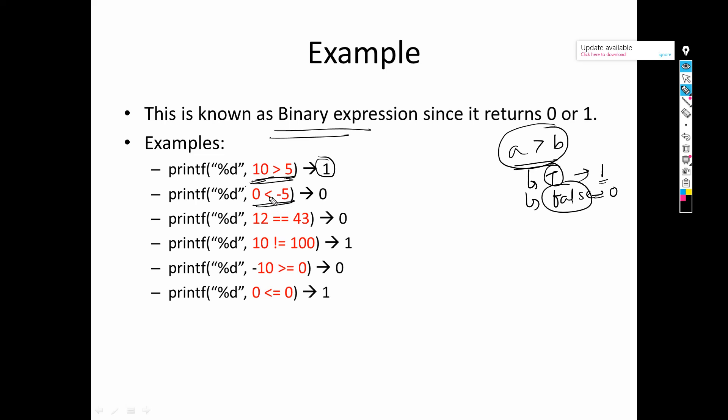Another example: 0 less than -5. So 0 less than -5. We can ask is 0 less than -5? We say no, 0 is not less than -5. So this is false. False means 0, so that's why it is 0.